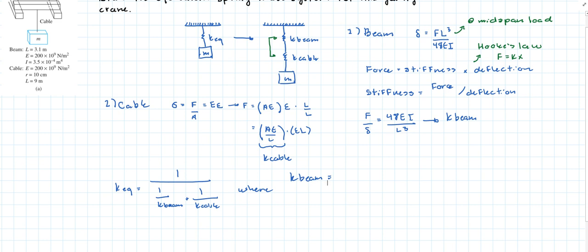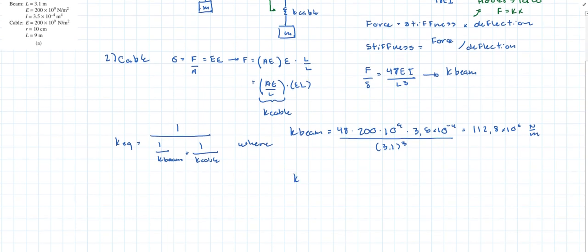So the beam is 48 times 200 times 10 to the 9 times 3.5 times 10 to the minus 4, all of that divided by 3.1 meters cubed. And that'll give you 112.8 times 10 to the 6 newtons per meter.